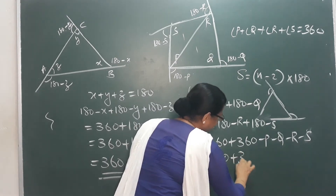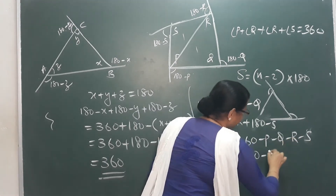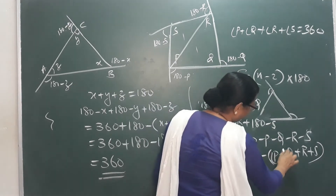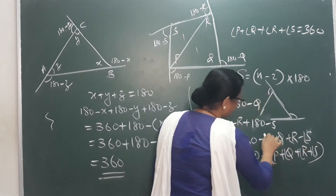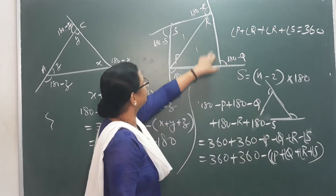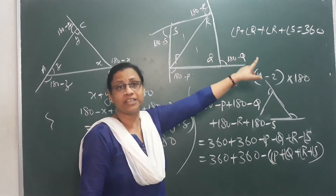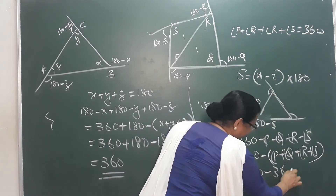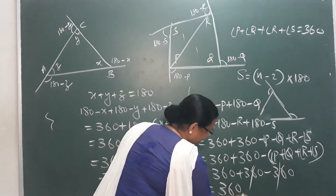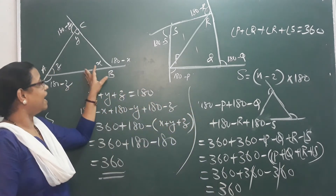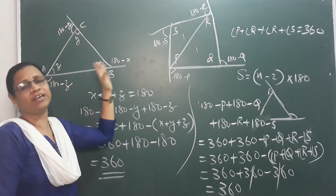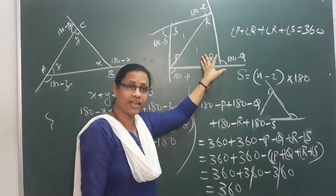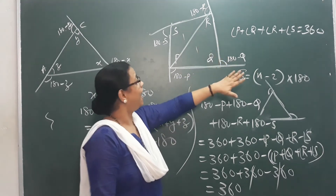So the sum is 360 plus 360 minus (P plus Q plus R plus S). Since the inner angle sum P plus Q plus R plus S equals 360 for a quadrilateral, we get 720 minus 360, which equals 360. The outer angle sum of a quadrilateral is also 360.